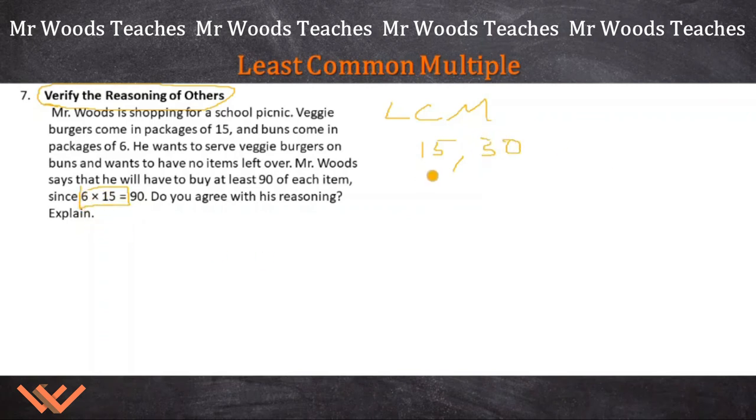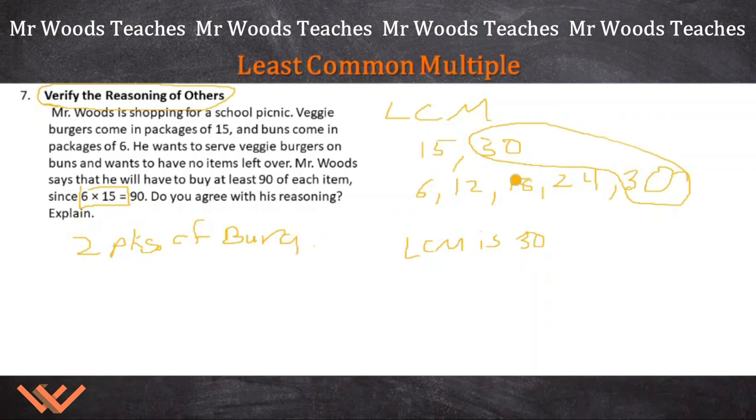So I'm going to stop because I'm looking here going, well wait a minute, 6. Look at this 6, 12, 18, 24, and 30. There's my LCM right here. So the LCM is 30. So I can explain it. And I would explain it something like this. To find the least amount Mr. Woods would have to buy for each item, we would have to go through and go, wait a minute, we need to find out what is this here. So we have 30 and 30. So it's going to be two packages of burgers and 1, 2, 3, 4, 5 packages of buns. That's all he needs to buy if he wants to have nothing left over and not have to buy so many.